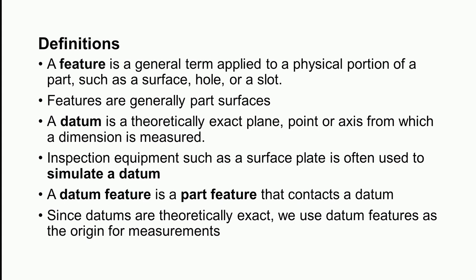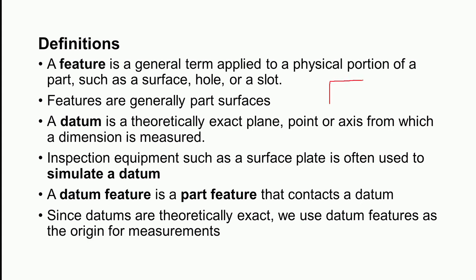Let us understand the various definitions associated with geometric deviations of components. We often use the term 'feature.' A feature is a general term applied to a physical portion of a component such as a surface, hole, or slot. These features are generally part surfaces. For example, if you have a component, the feature describes whether a particular surface is straight, cylindrical, or has out-of-roundness.